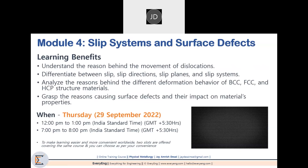The fourth module is on Slip Systems and Surface Defects. You will learn the reason behind the movement of dislocations — dislocations are basically the reason why materials deform — and we will talk about why dislocations move, in which directions, which planes and which systems, referred to as slip directions, slip planes and slip systems. We will analyze the reasons behind the deformation behavior of BCC, FCC and HCP structures. Learners will also gain an understanding of the reasons causing different surface defects and how these surface defects impact material properties. This is on 29th September, 12 p.m. to 1 p.m. and 7 p.m. to 8 p.m., with flexible slots.